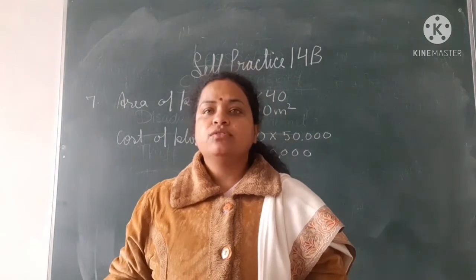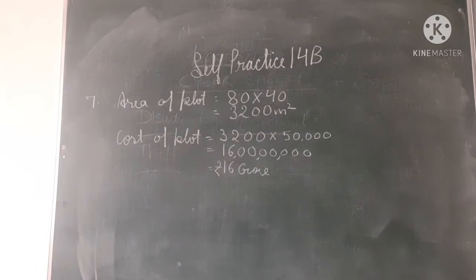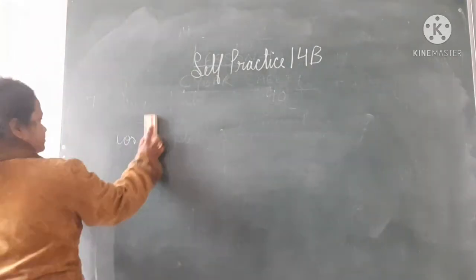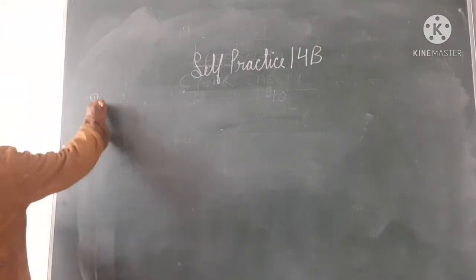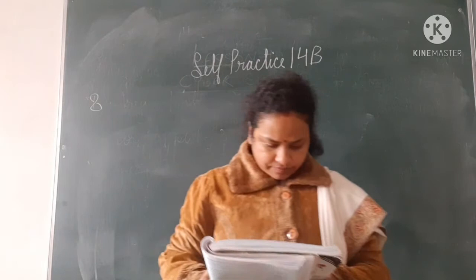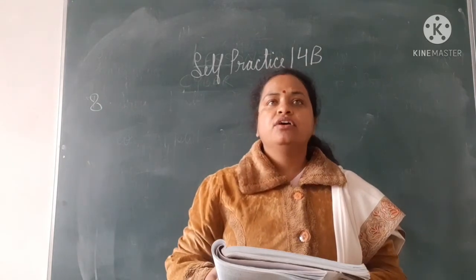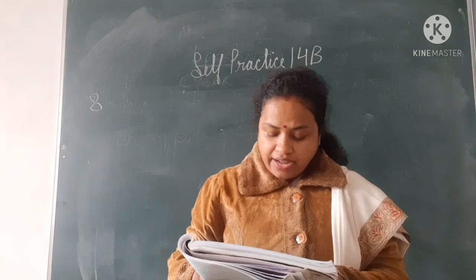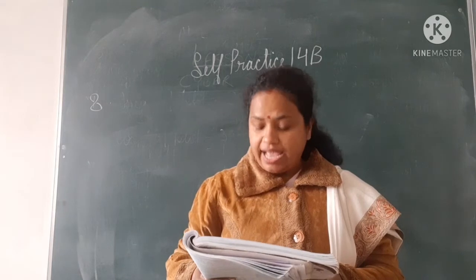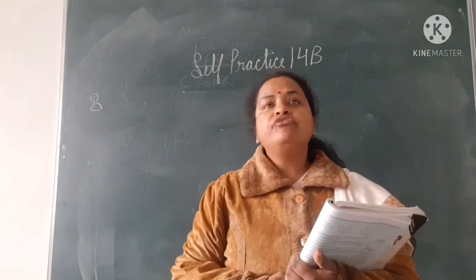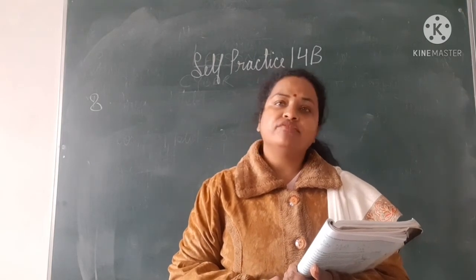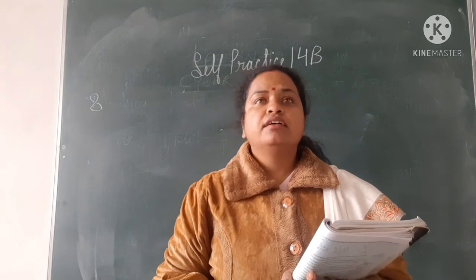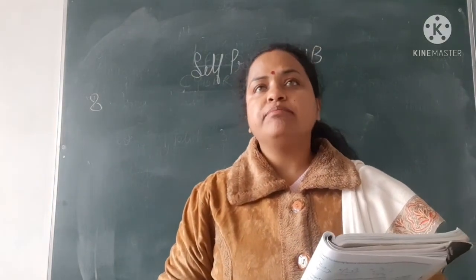Now see question number 8. How many tiles each 25 centimetre by 20 centimetre are required for the floor of a room 12 metre long and 9 metre wide? You will find the area of the tiles and the area of the room. After finding area of the room and area of the tiles, you will divide to get how many tiles are required.